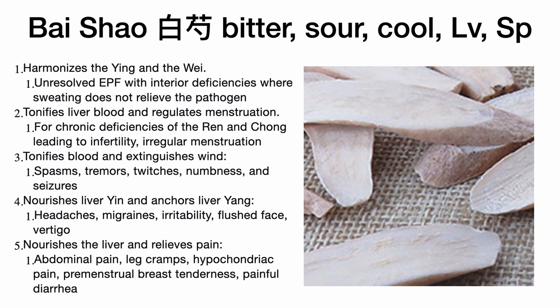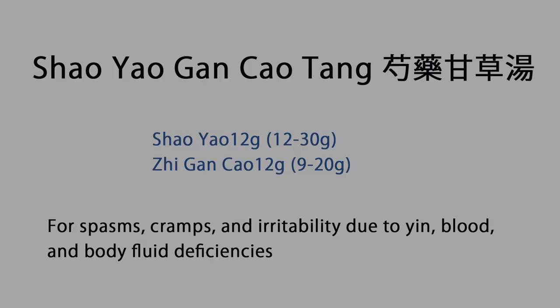Bai Shao is used to treat headaches, migraines, irritability, flushed face, and vertigo. It also treats spasms and leg cramps due to liver blood deficiency — elderly people often experience leg cramps at night due to blood deficiency, and this is a great herb to address that symptom. The ruling formula for that presentation is Shao Yao Gan Cao Tang.